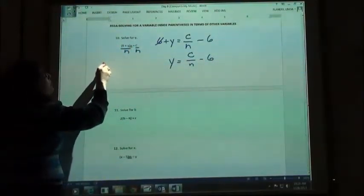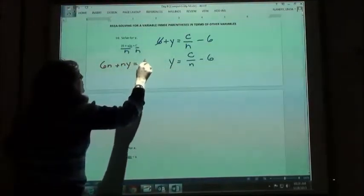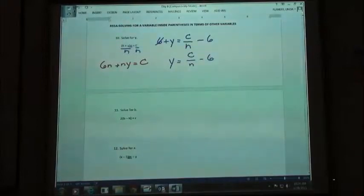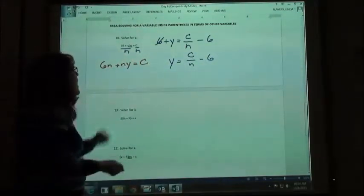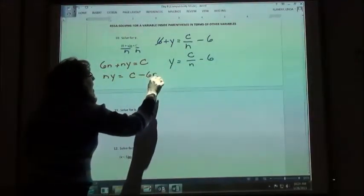If I use my distributive property, 6n plus ny is going to equal c, right, using my distributive property. I want to solve it for y, so I would move this to the other side. So ny would equal c minus 6n.